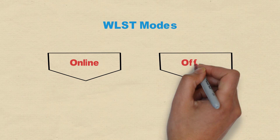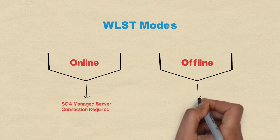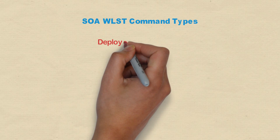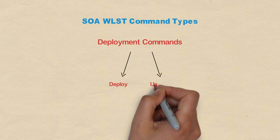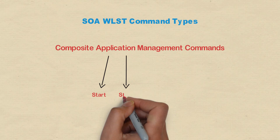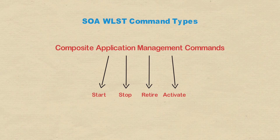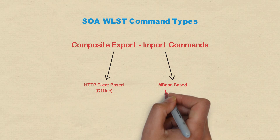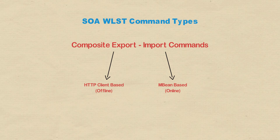We have two modes to execute these commands: online and offline modes. In online mode, you need to connect to SOA managed server before executing the commands. In offline mode, we don't need to connect to managed server and we can pass the connection details in the command line directly. We also have different types of commands like deployment commands, which are used to deploy and undeploy SOA composite applications. And we have application management commands, which can be used to start, stop, retire, and activate SOA composite applications. We also have export and import commands, with HTTP client-based and mbean-based commands. HTTP client-based commands can be executed in offline mode, but for mbean-based commands, you need to be in online mode.